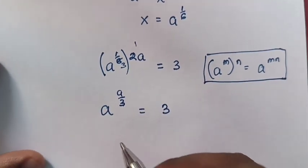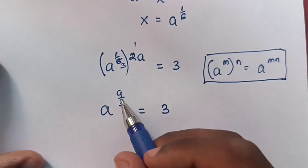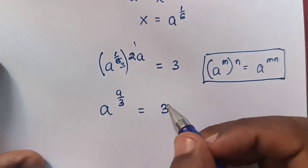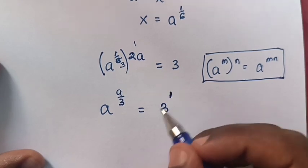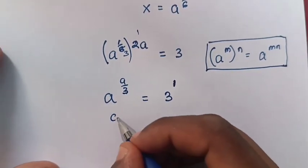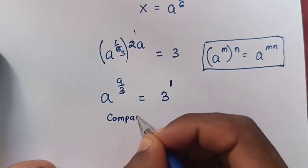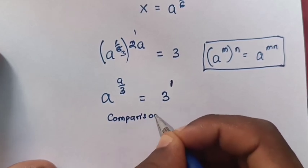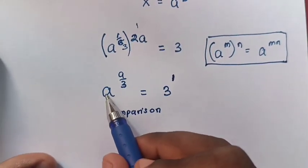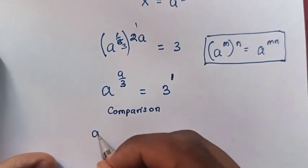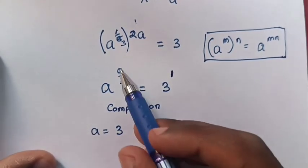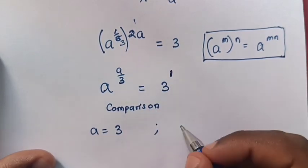Now, we can see here a power of a over 3, but here 3 has no power. So, it's the same as 3 power 1. Then, we will do comparison — comparison of bases: a is equals to 3. And comparison of powers: a over 3 is equals to 1.